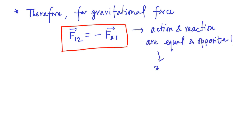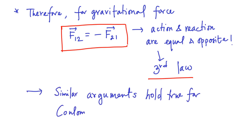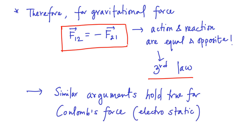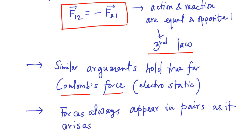This is precisely the statement of Newton's third law. Similar arguments also hold true for Coulomb forces, and the underlying reason why this statement is true is that forces always appear in pairs, as they arise due to interaction between two particles.